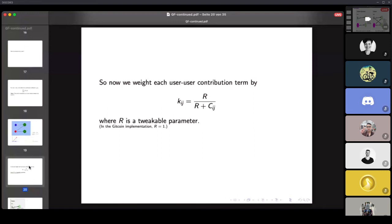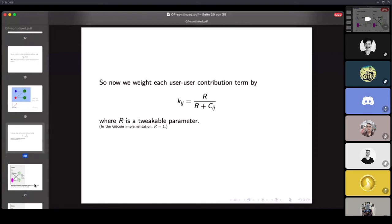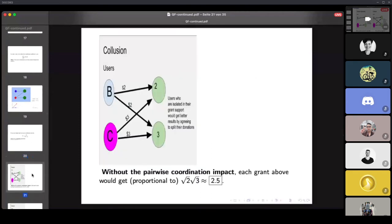So then you take the c_ij that we just calculated and you can transform it into a k_ij by setting k_ij equal to R over R plus c_ij, where R is a parameter that you can tweak depending on how you want to weight the system. In the Gitcoin implementation, R is equal to [value]. So what this does is as c_ij grows, as they become more and more coordinated, this term will tend toward zero. And so users that are completely coordinated and basically clones of each other will have their contributions downweighted toward zero, and that disincentivizes collusion.